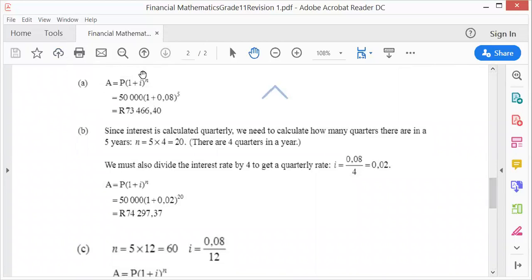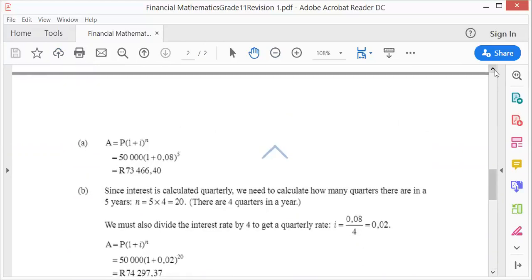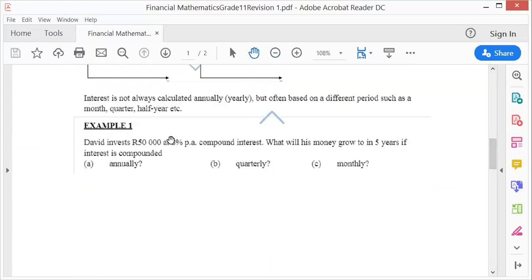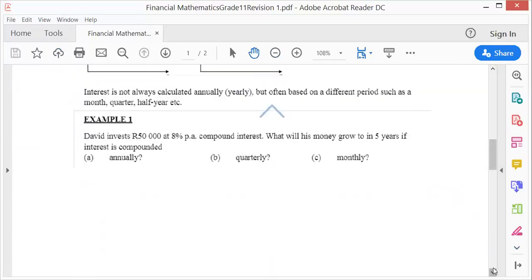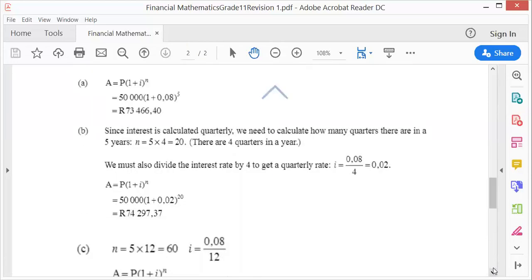If this is annually, then i will be your interest rate - 8% divided by 100 gives you 0.08, and n is 5. This is annually, so it's just a straightforward substitution.